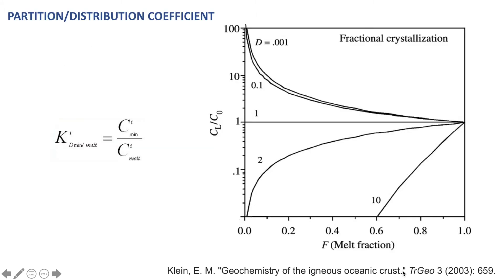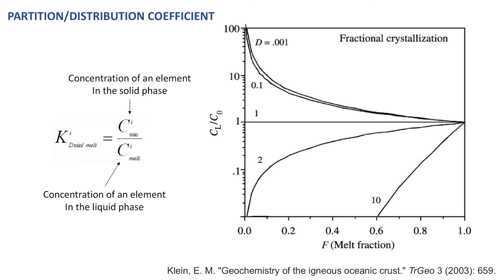That looks like a particularly daunting diagram but we'll break it down. A partition — or sometimes distribution — coefficient essentially represents the concentration of an element in the solid phase over the concentration of that same element in a coexisting liquid phase, which is sometimes denoted as KD or D.